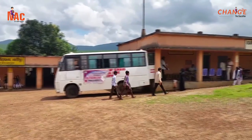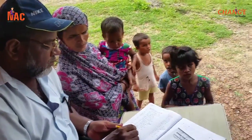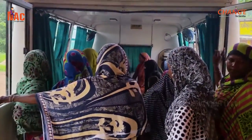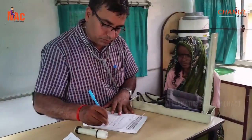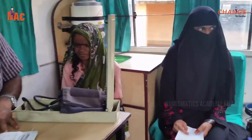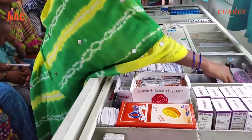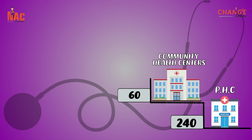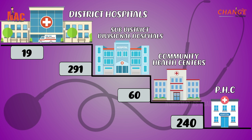The government of Jharkhand has worked to provide better health services throughout the state, recruiting more medical officers and paramedical staff on a contractual basis. Village health committees have been set up in all villages, the health budget has been doubled, and a state fund for medical assistance provides help to people below the poverty line. As per the rural health statistics 2019–2020, Jharkhand has 240 primary healthcare centers, 60 community healthcare centers, 291 sub-district and divisional hospitals, and 19 district hospitals.